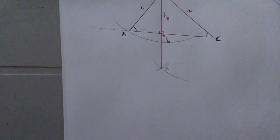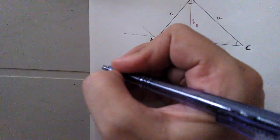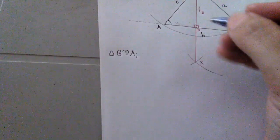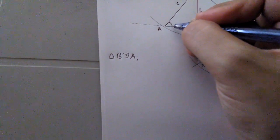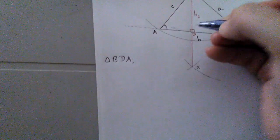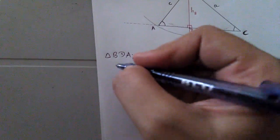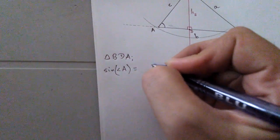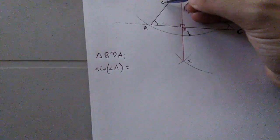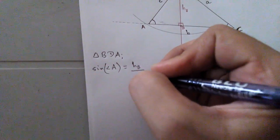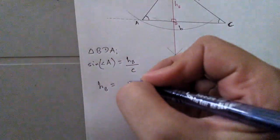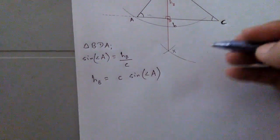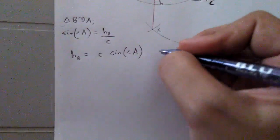Let us do some calculations. In triangle BDA, with respect to angle A, BD is the opposite side and AB (length c) is the hypotenuse. So sine of angle A equals the opposite side upon the hypotenuse: sin A = h_B / c. Therefore, h_B = c · sin A. I call this equation number 1.